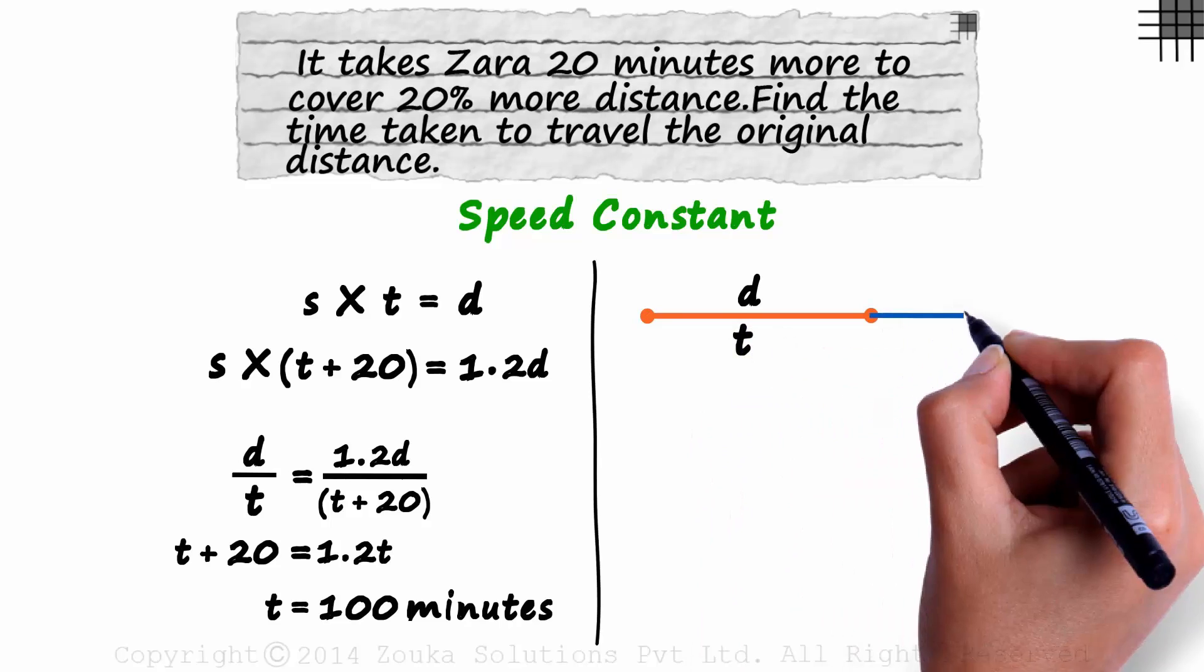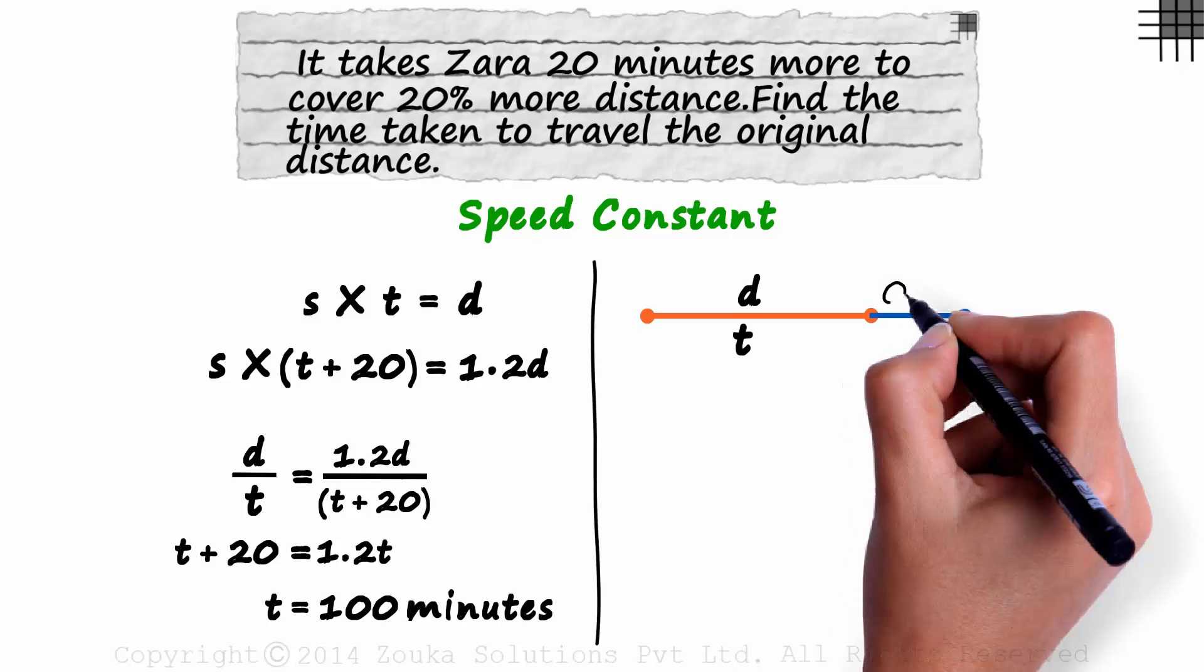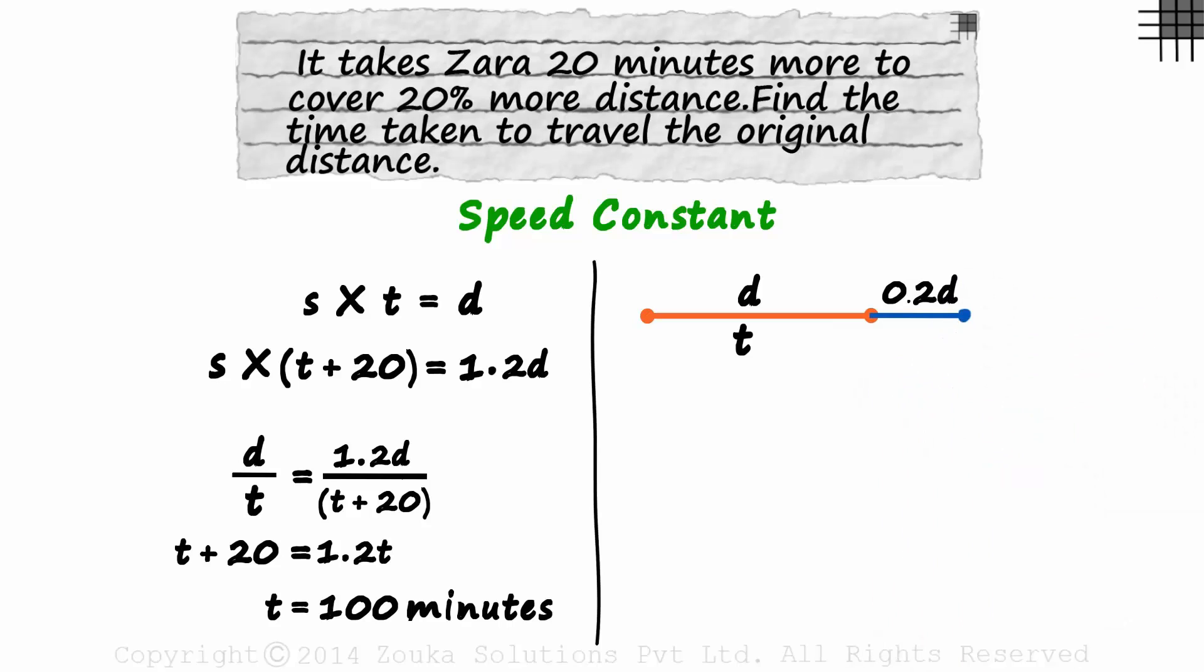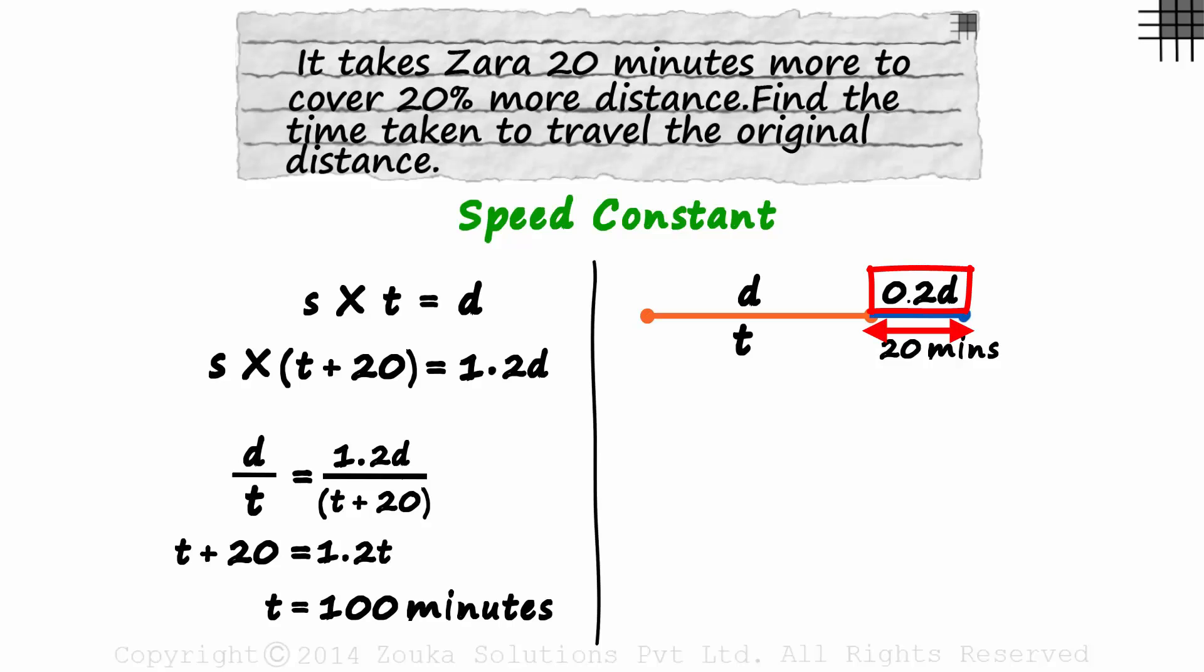Now let this be 20% of the distance. As it is 20% of the original distance, it will be equal to 0.2D. 20% of D is 0.2D. And based on the question, we can say that Zara takes 20 minutes to travel this distance, this 0.2D distance. Now we can look at these two parts individually.